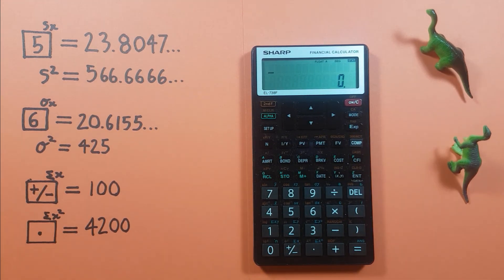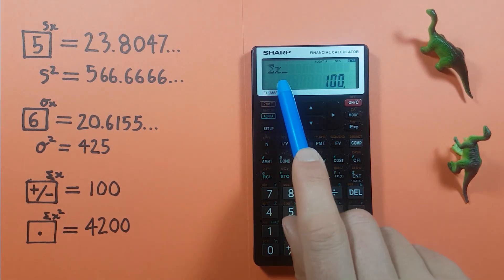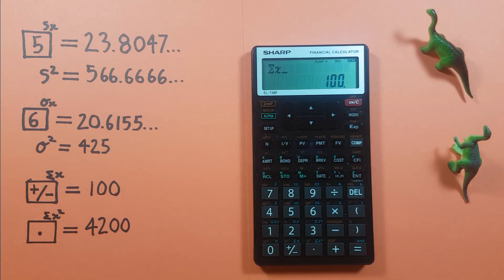Next we can get a sum of our data set by hitting the recall key and then the plus minus key and we see we get a sum of 100 which is correct remember our data set was 60, 20, 10, 10 so that adds up.